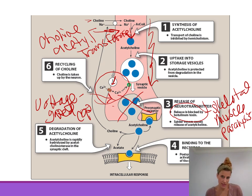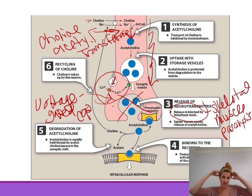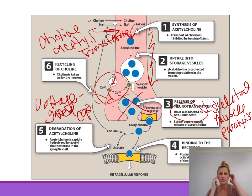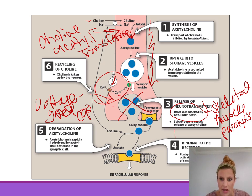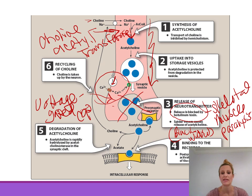Systemically, botulinum toxin is dangerous and deadly — if the diaphragm isn't contracting, you're not breathing. However, we can utilize it clinically. Botox is used aesthetically by paralyzing facial muscles to decrease the appearance of wrinkles, and it is also used off-label for conditions like migraines. Some spider venom, specifically black widow, stimulates the release of acetylcholine, dumping a large amount that then stimulates the postsynaptic cells.